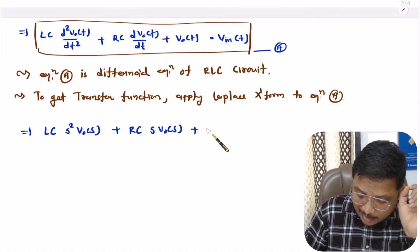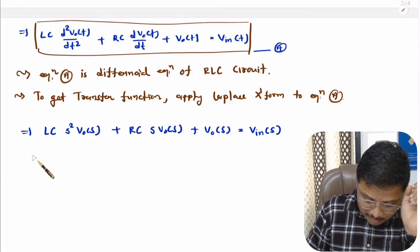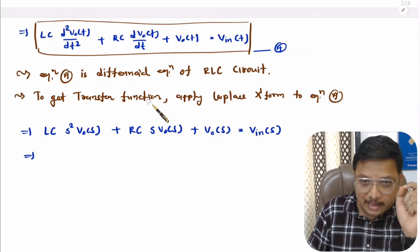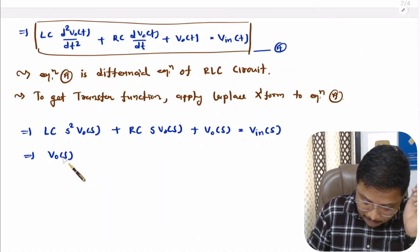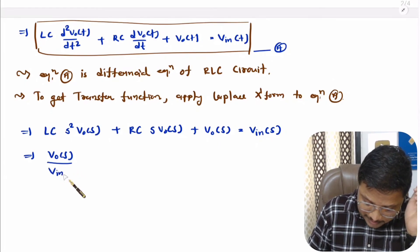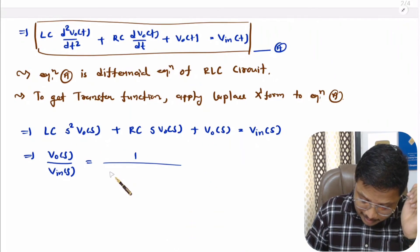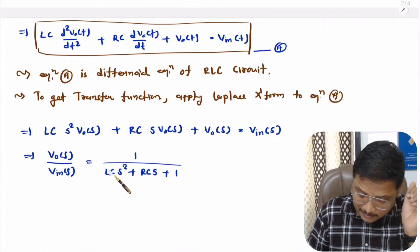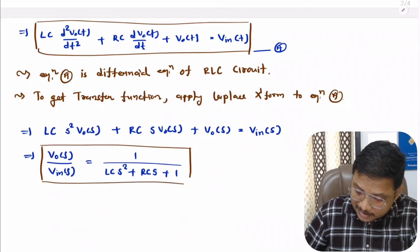V_out(T) in the Laplace domain becomes V_out(S), and V_in(T) becomes V_in(S). The transfer function is output voltage divided by input voltage. Taking V_out(S) common and dividing by V_in(S), the transfer function equals 1 divided by (LC S² + RC S + 1). This is equation B, which is our transfer function.